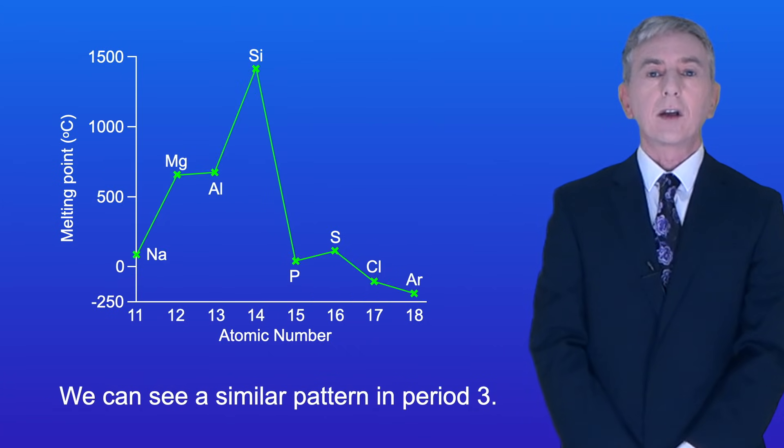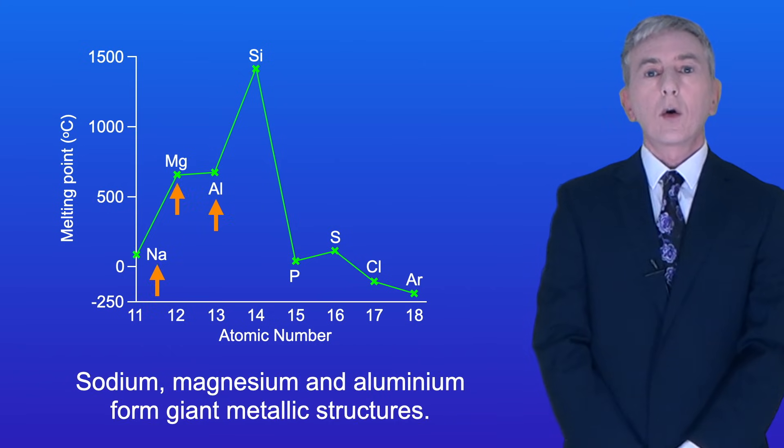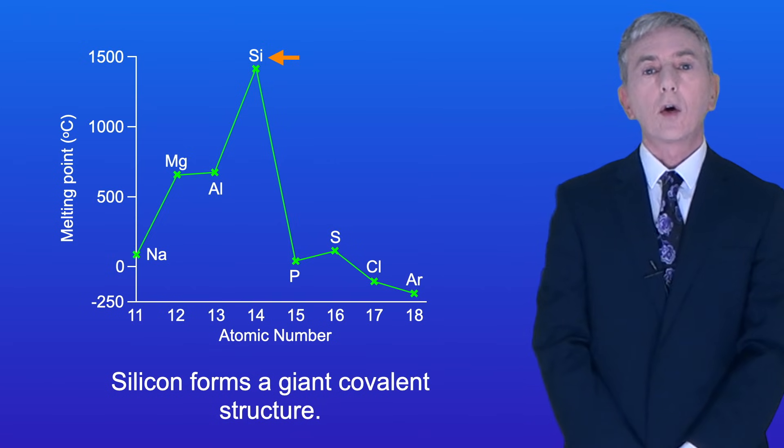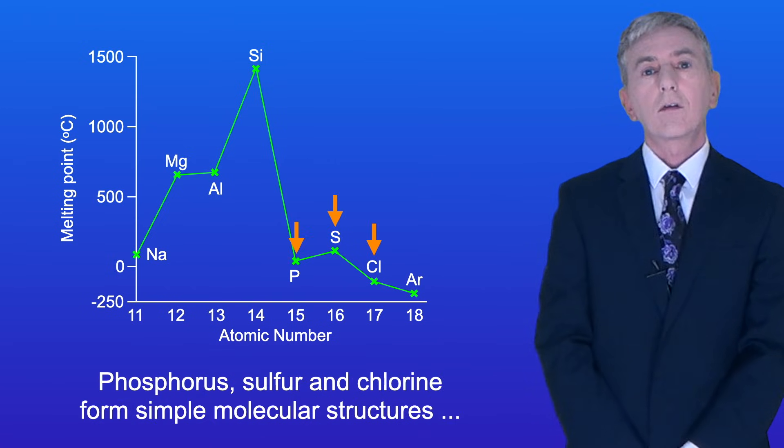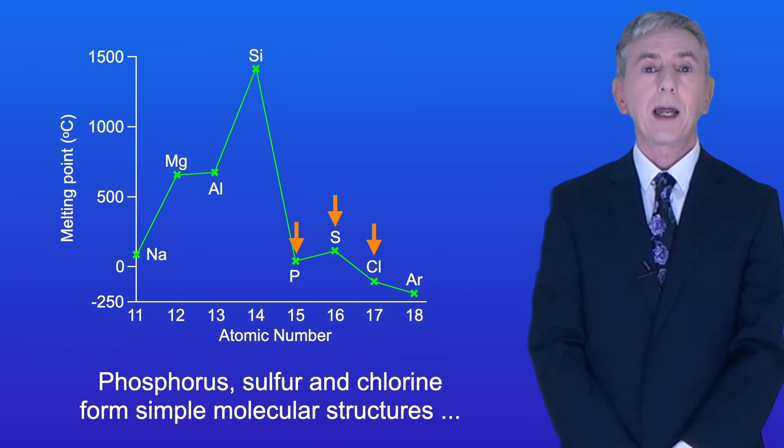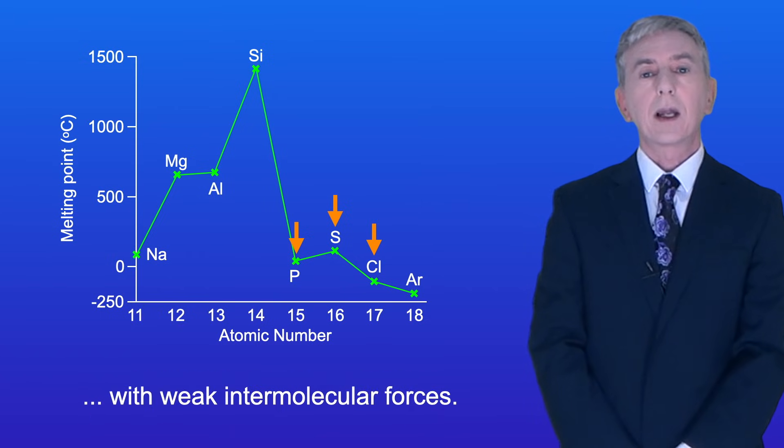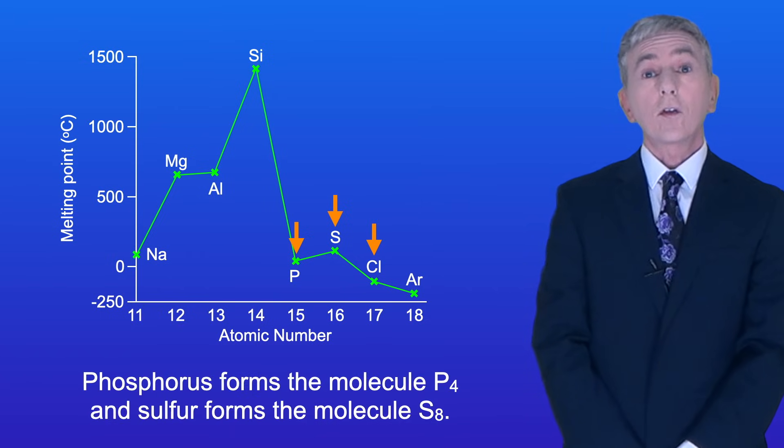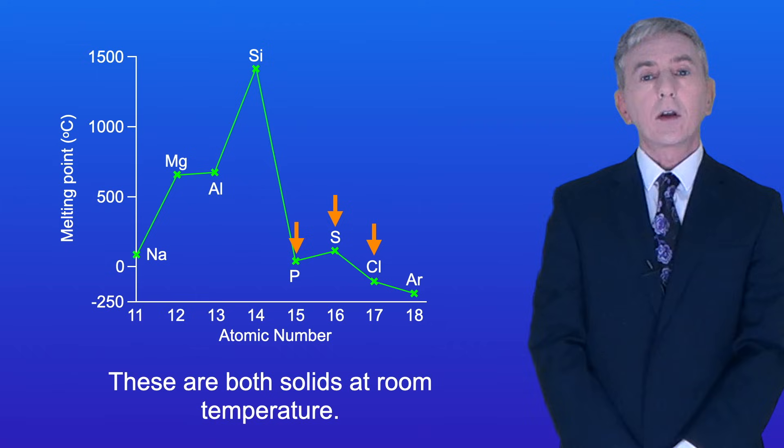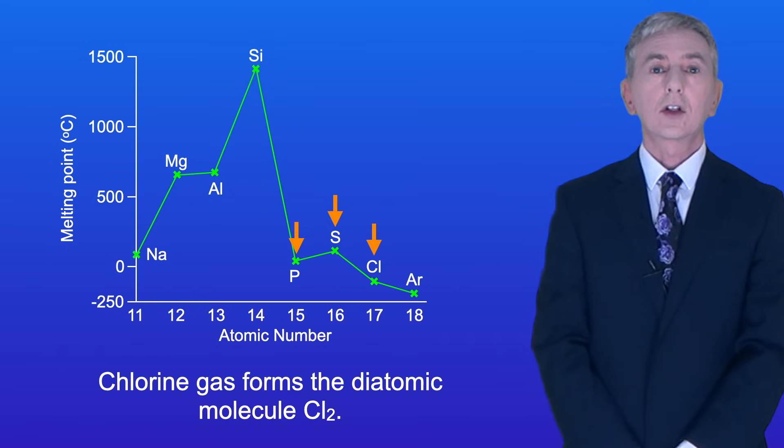Now we can see a similar pattern in period 3. Sodium, magnesium and aluminium form giant metallic structures. Silicon forms a giant covalent structure. Phosphorus, sulfur and chlorine form simple molecular structures with weak intermolecular forces. Phosphorus forms the molecule P4 and sulfur forms a molecule S8. These are both solids at room temperature. Chlorine gas forms the diatomic molecule Cl2.